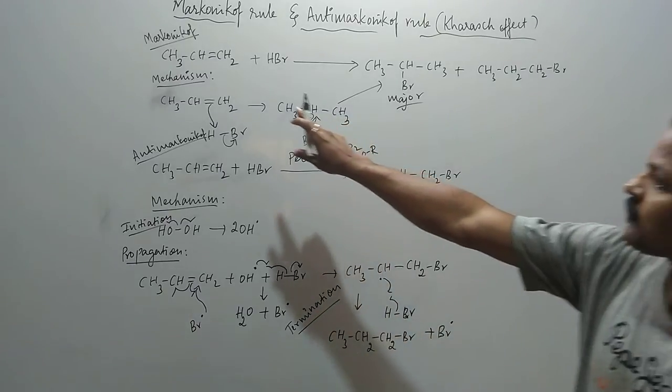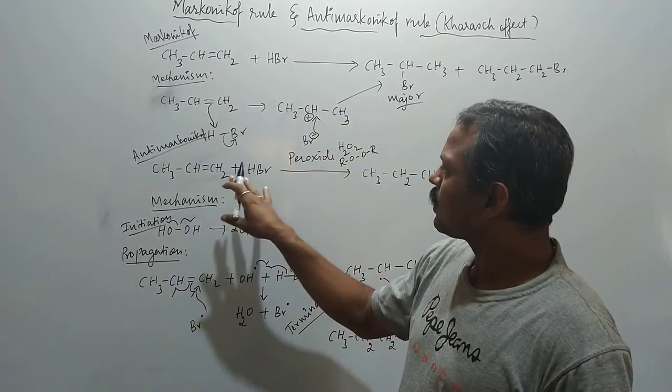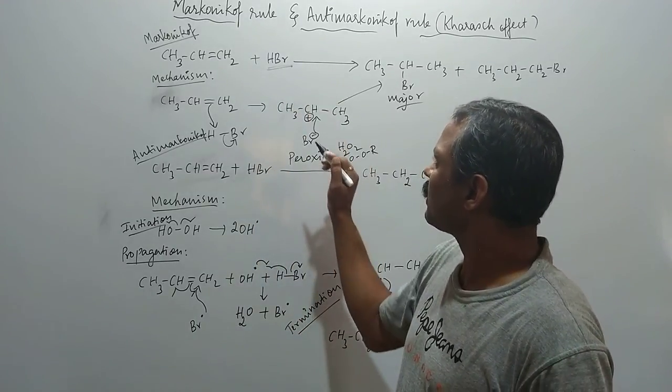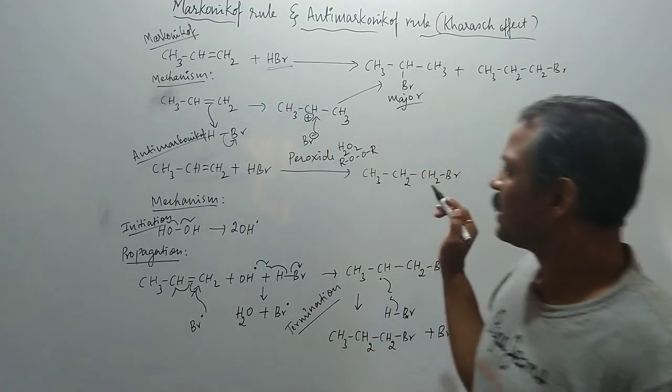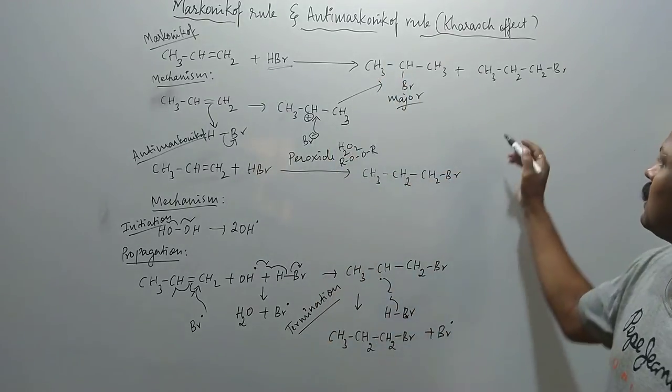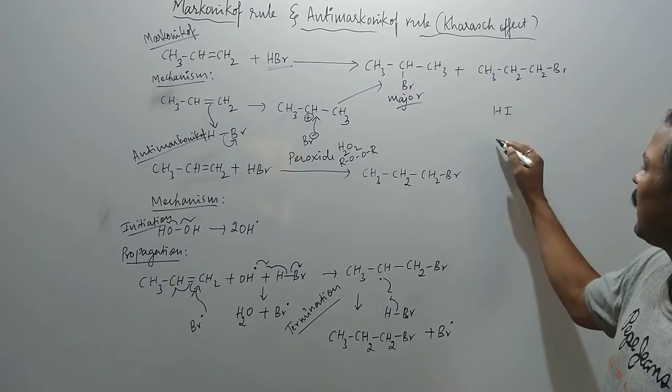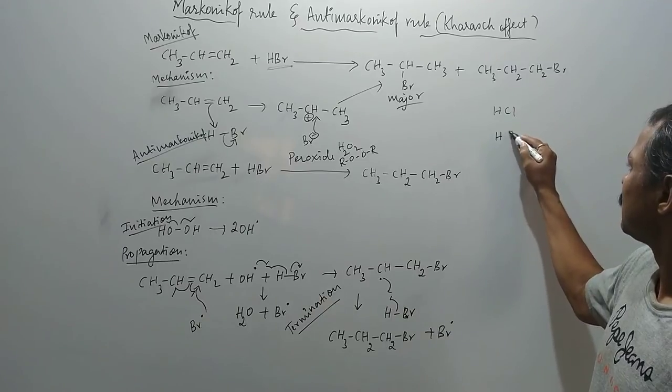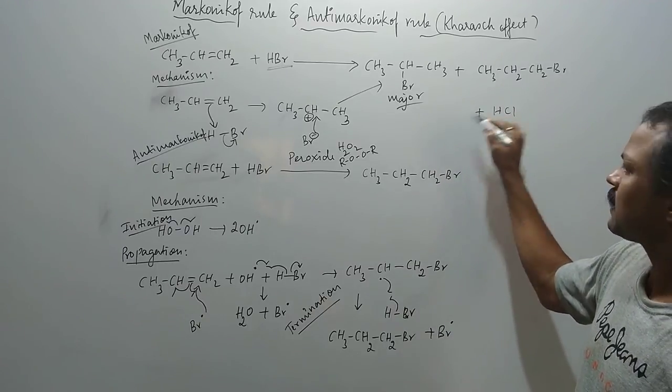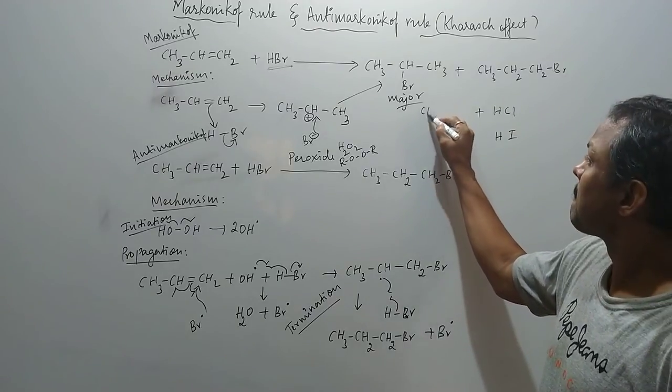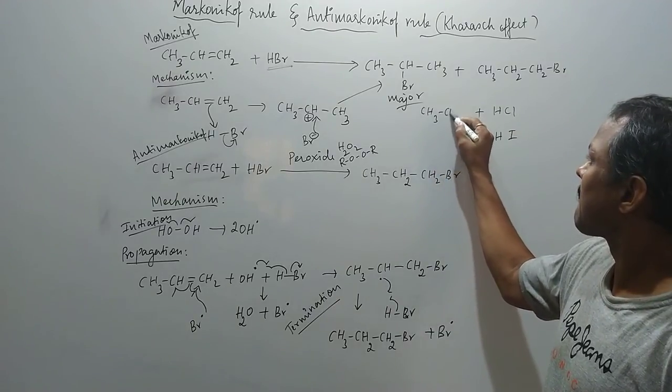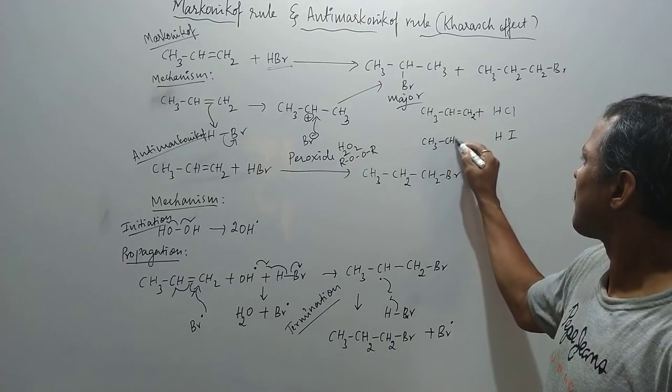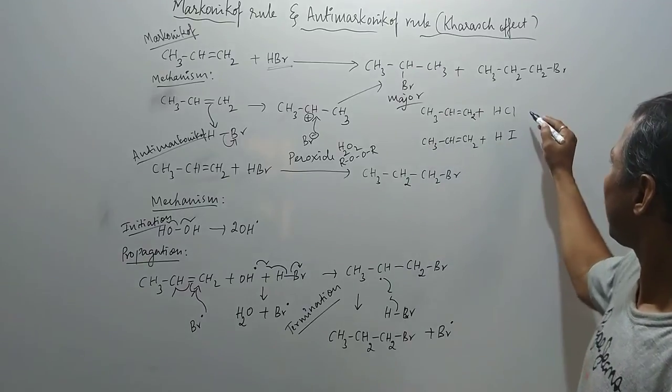But here some exception cases are there. The Markovnikov rule and anti-Markovnikov rule is applicable for hydrogen bromide or hydrobromic acid, but the same is not applicable to hydrogen iodide and hydrochloric acid. So here if I take the same molecule...